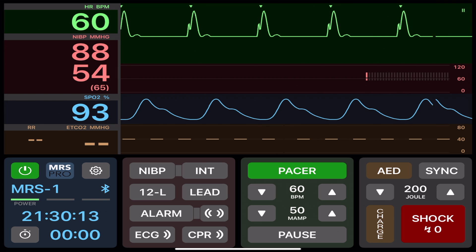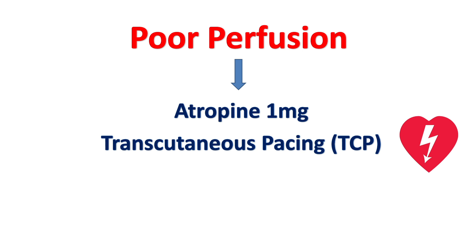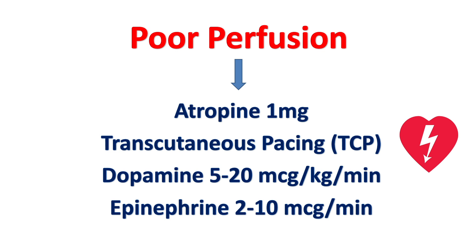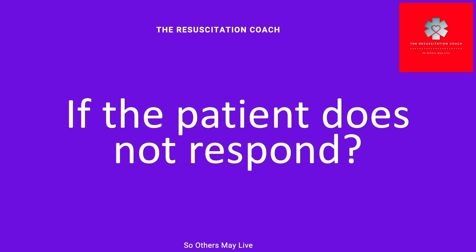Do not wait for an emergency to arrive and then try to figure out how to use the device for pacing. Dopamine stimulates the beta-1 adrenoreceptors resulting in improved myocardial contractility. It increases the SA node rate and enhances impulse conduction in the heart. The dose of dopamine is 5 to 20 micrograms per kilogram per minute. You can also use epinephrine and the dose is 2 to 10 micrograms per minute. If the patient does not respond to atropine, TCP, dopamine, and epinephrine, seek expert consultation and prepare for transvenous pacing.